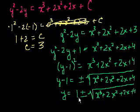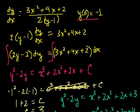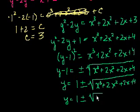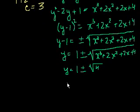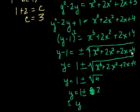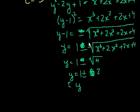Since there's a plus or minus, we go back to the initial condition y(0) equals negative 1. Substituting x equals 0 gives y equals 1 plus or minus square root of 4, which is 1 plus or minus 2. For y to equal negative 1, we need 1 minus 2, so the explicit solution satisfying the initial condition is y equals 1 minus the square root of (x to the third plus 2x squared plus 2x plus 4). See you in the next video.